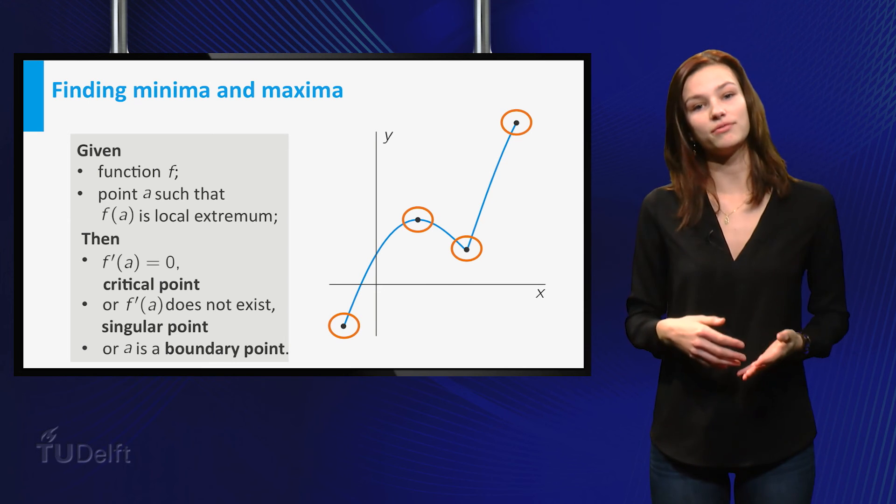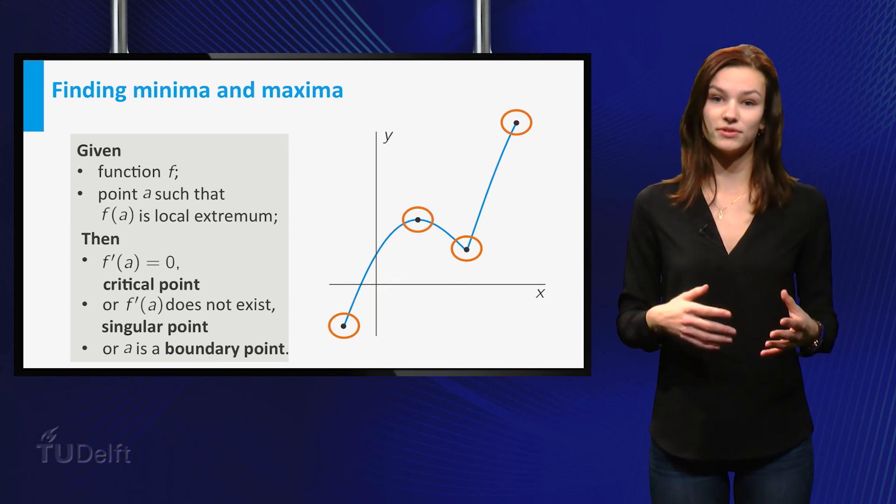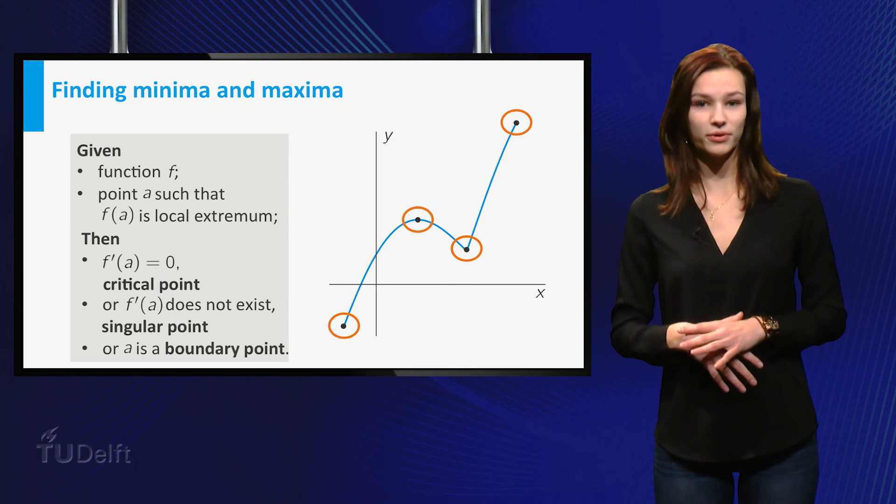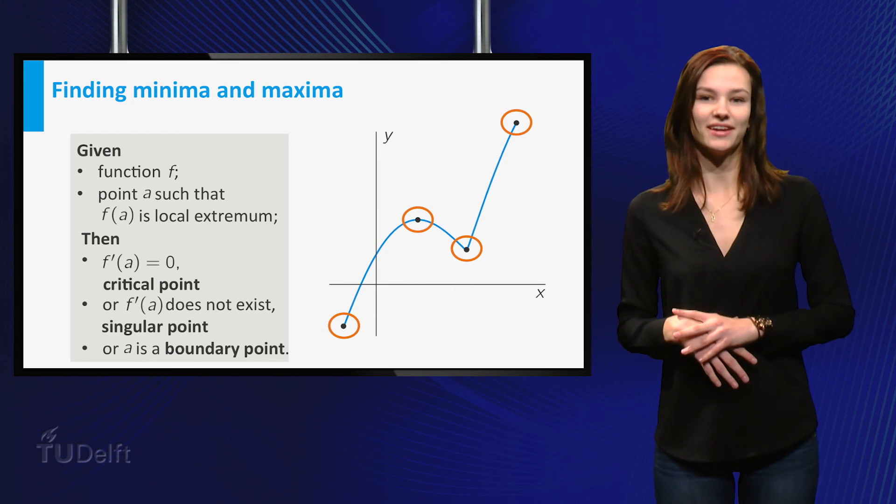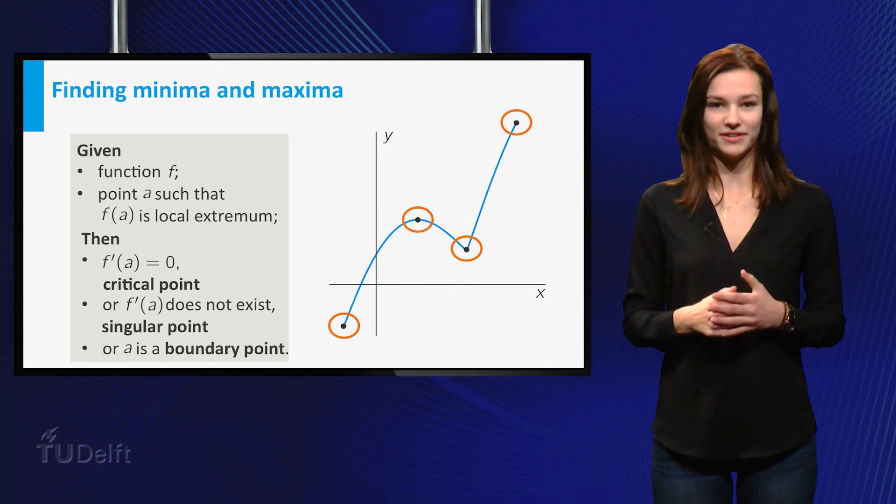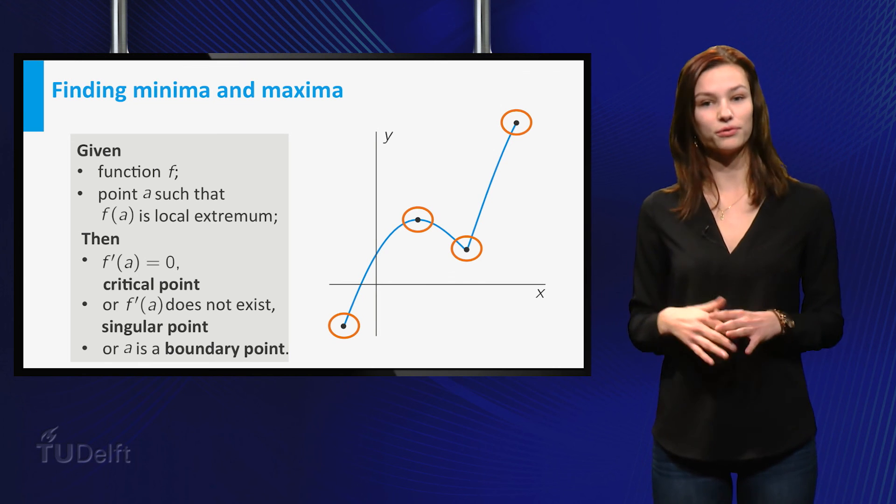The points where the derivative of f equals zero are called critical points, points where the derivative does not exist are called singular points, and if a point is at the boundary of the domain, we call it a boundary point. To find the maximum or minimum of f, you must check all three types of points.